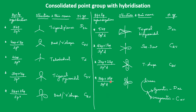If three lone pairs are present in SP3D, all three become lone pairs and the remaining two bonds form a straight line — so the structure is linear. For linear structures, there are two cases: if it is symmetric linear, the point group is D∞H; if it is asymmetric linear, the point group is C∞V.